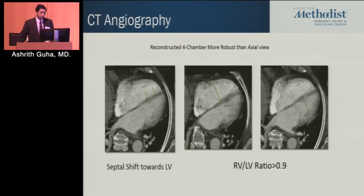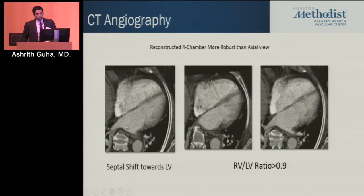CT angiography is another tool we can use — you get two for one, because you don't always have to get an echo, though that is a little controversial. Using a reconstructed four-chamber view and measuring the RV to LV dimension — if the RV to LV dimension is greater than 0.9, that is a definite poor prognostic sign, as is septal shift towards the LV.